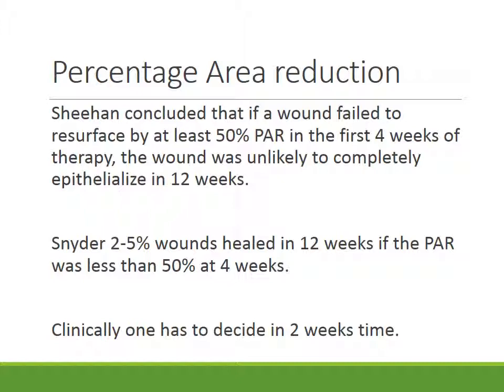Sheehan conducted a study initiative somewhere in the 1980s, which was repeated by Schneider. Sheehan concluded that if a wound failed to resurface and shrink by 50% of its original size in the first 4 weeks, then it was highly unlikely that the wound would close in 12 weeks. Schneider found the same thing and concluded that if the wound fails to shrink in 4 weeks, only 2–5% of those wounds would completely heal in 12 weeks.